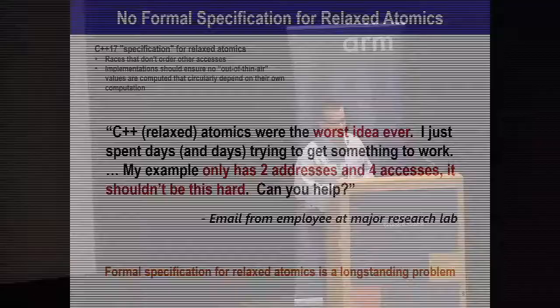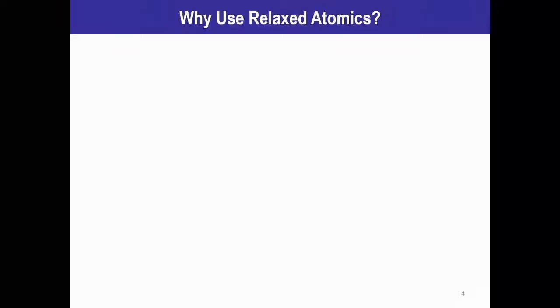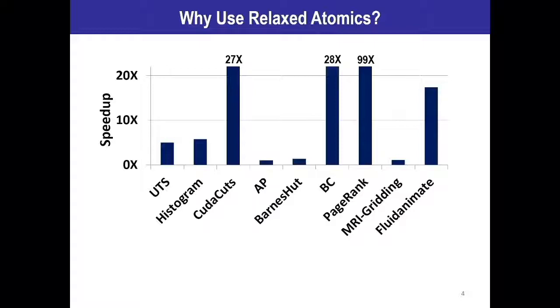One of the major underlying problems is that we don't have a formal specification for relaxed atomics, and this has happened despite many years of effort trying to do so. So if it's this difficult to use them correctly, why do we bother? Because we can get better performance. What I have shown here is on a discrete GPU for a series of benchmarks that do use relaxed atomics, and you can see significant speedups in many of these cases. That's why people are willing to put up with relaxed atomics — the benefits of doing so are very high.